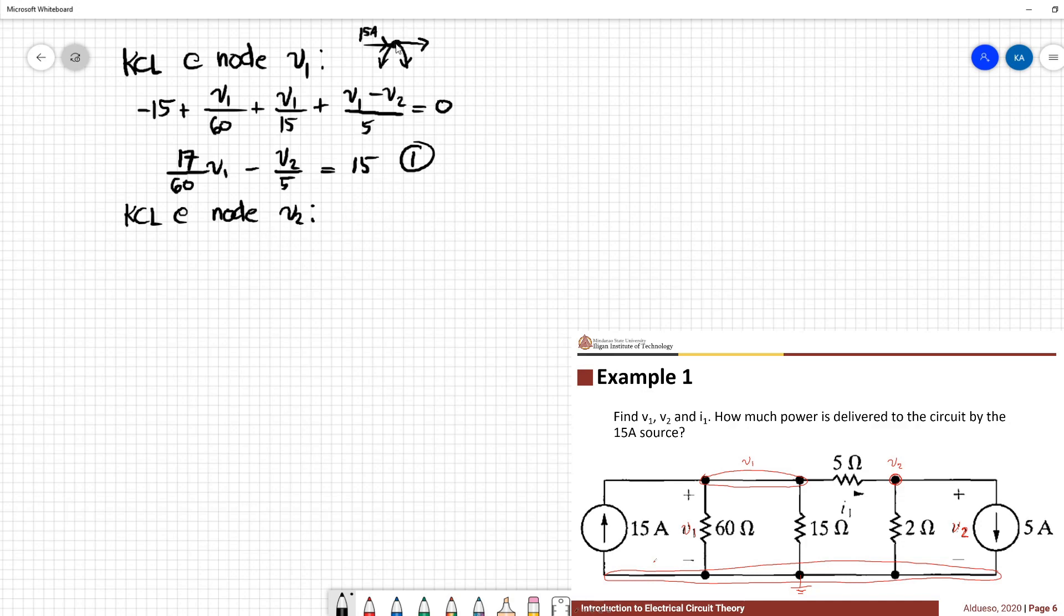We have V2 minus V1 over 5 plus V2 over 2 plus 5 equal to 0.